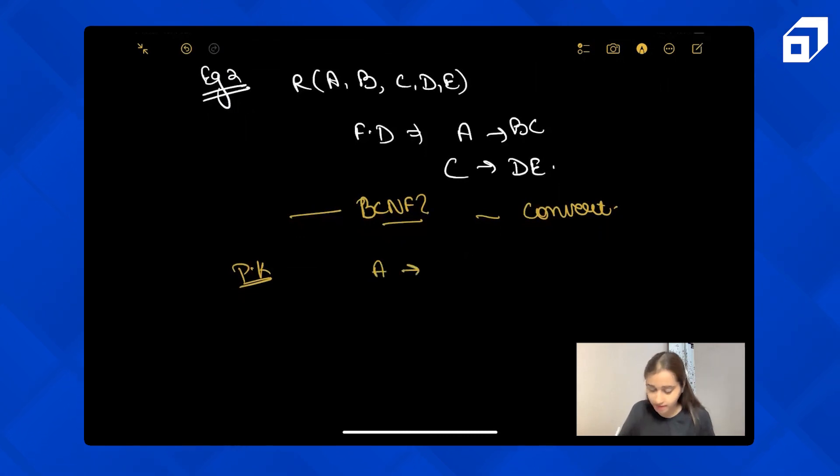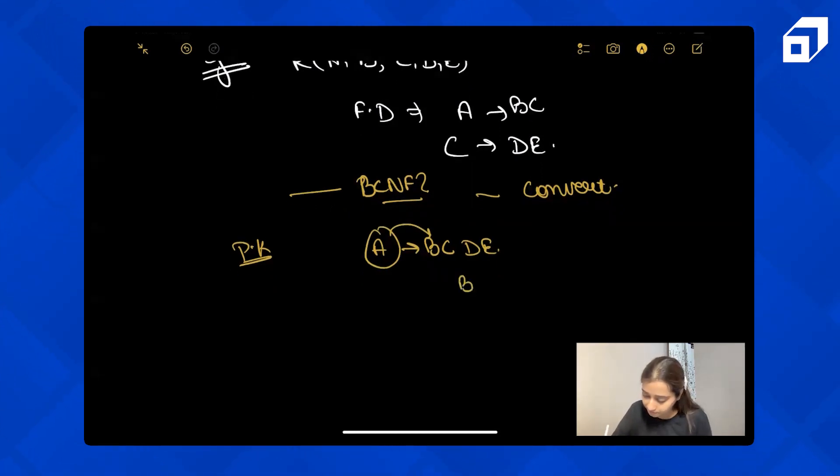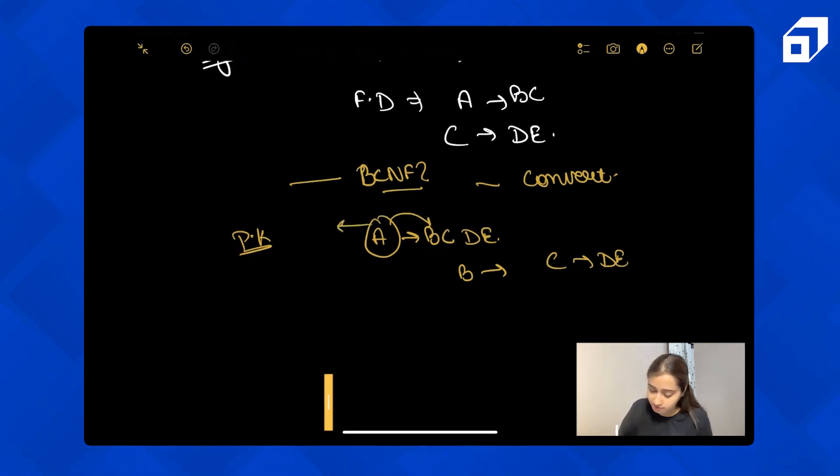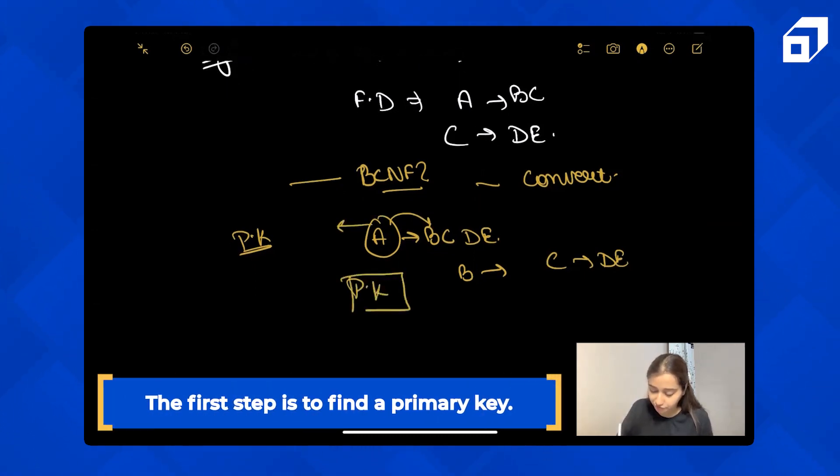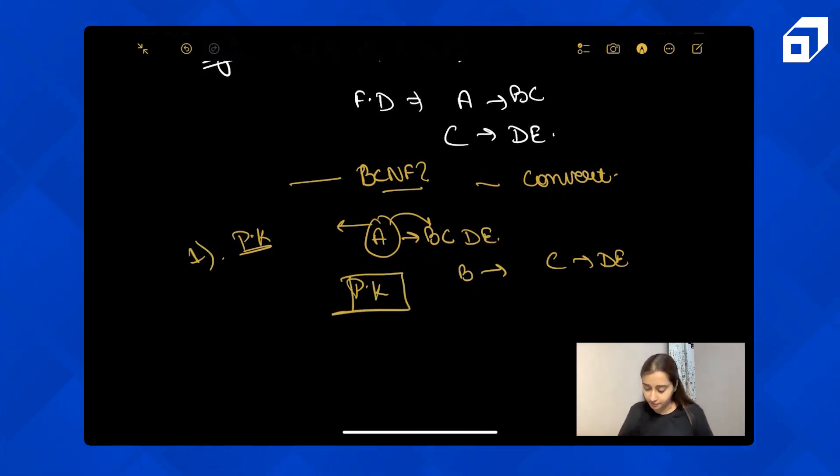So primary key is A. Can A be the primary key? From A I can get BC and from C I can get D, E as well. So from A I am getting all the other attributes, all the other columns of the table. From B, can I get anything? No. From C can I get? Yeah, I can get D, E. But after that, no other attributes, no other columns. So A becomes my primary key. The very first step is to find the primary key. So A becomes my primary key of the table.